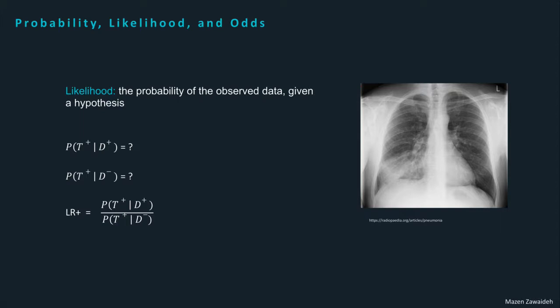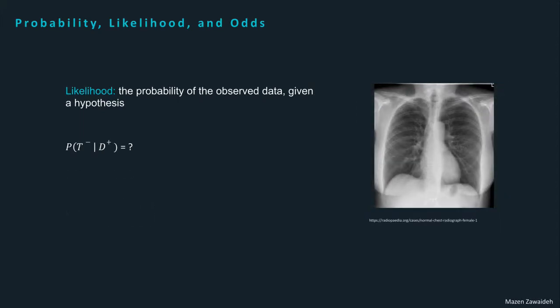Let's repeat the exercise for a chest radiograph with no abnormal findings — that is, a normal chest radiograph. What is the probability of a normal exam given our hypothesis that the disease is present? We can also ask: what is the probability of a normal exam given our hypothesis that the disease is absent? If we take the ratio of these two conditional probabilities, we end up with the negative likelihood ratio. The distinction between probability and likelihood is important and somewhat nuanced; we will discuss this separately in a later lecture. For now, just remember that there is a distinction between probability and likelihood.